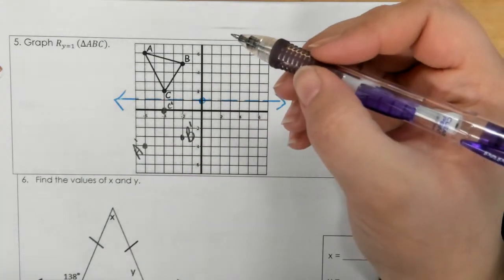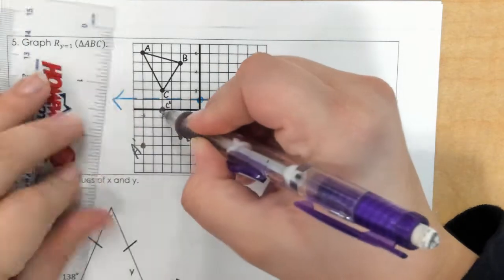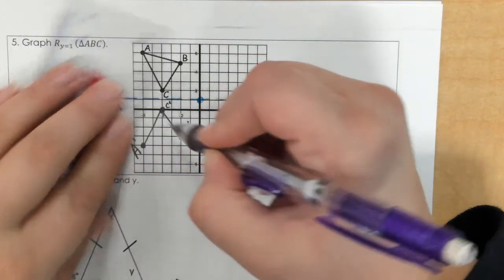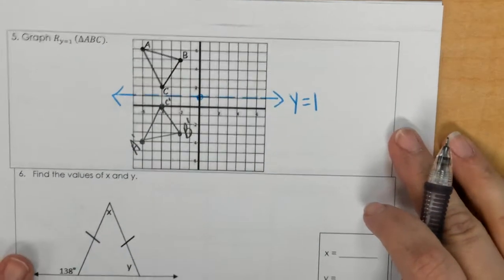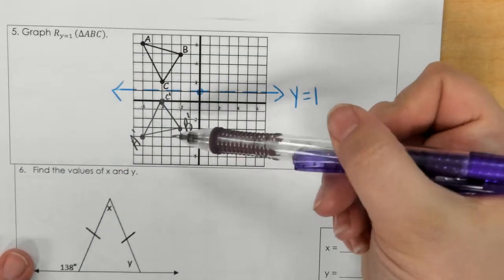And then once we have a, b, c prime, we can go ahead and connect those. So that would be reflected over y equals 1.